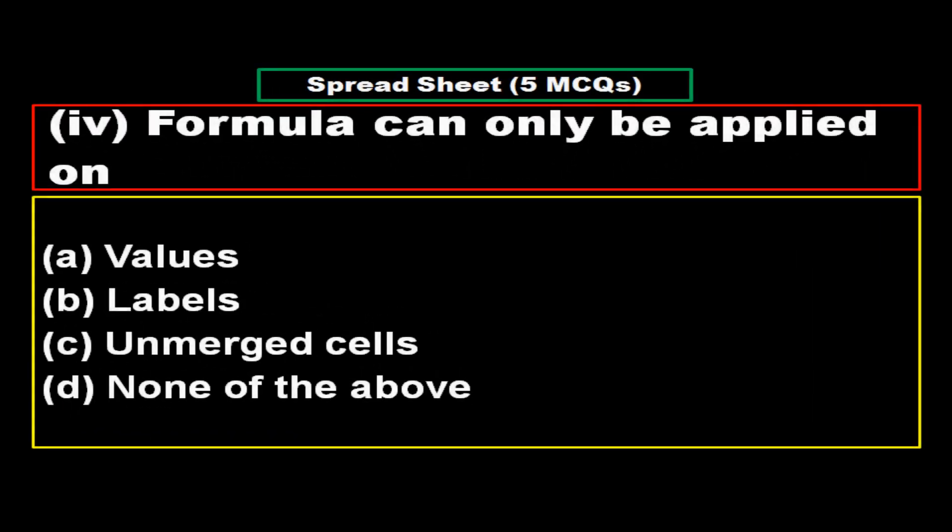Options: Option A: Values, Option B: Labels, Option C: Unmerged cells, Option D: None of the above. And the right answer is Option A: Values.